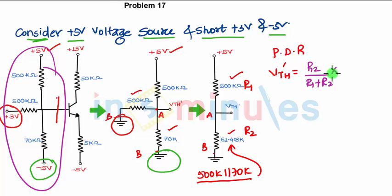I am not writing kilohms because kilo and kilo will cancel from the numerator and denominator, multiplied by 5 volts. So this will give you Vth dash.